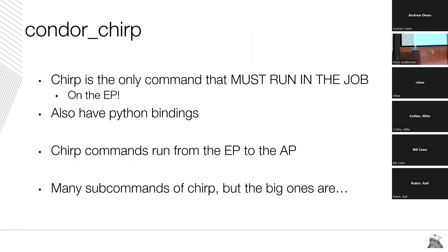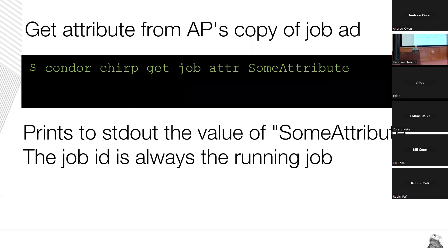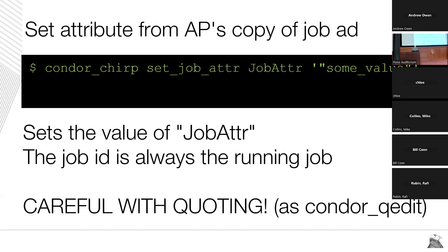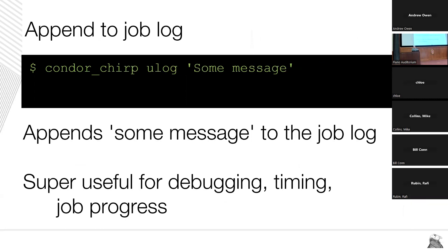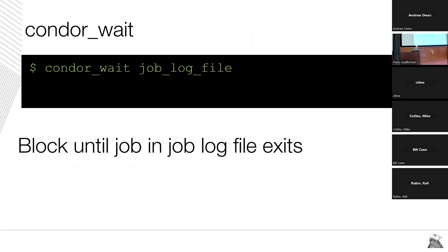The next command that works on running jobs is condor_chirp — the only command that must run inside the job and on the execute point. We also have nice Python bindings, so chirp commands can be run from pure Python. The most important sub-commands include getting job ad attributes from the AP and setting job ad attributes — the job ad is kind of like a blackboard. Be careful with quoting since we have both shell and ClassAd quoting. There's also a chirp command to append to the user log, super handy for debugging long-running jobs. condor_wait blocks until a job exits by reading an event file, and is usually used for building bigger scripts.